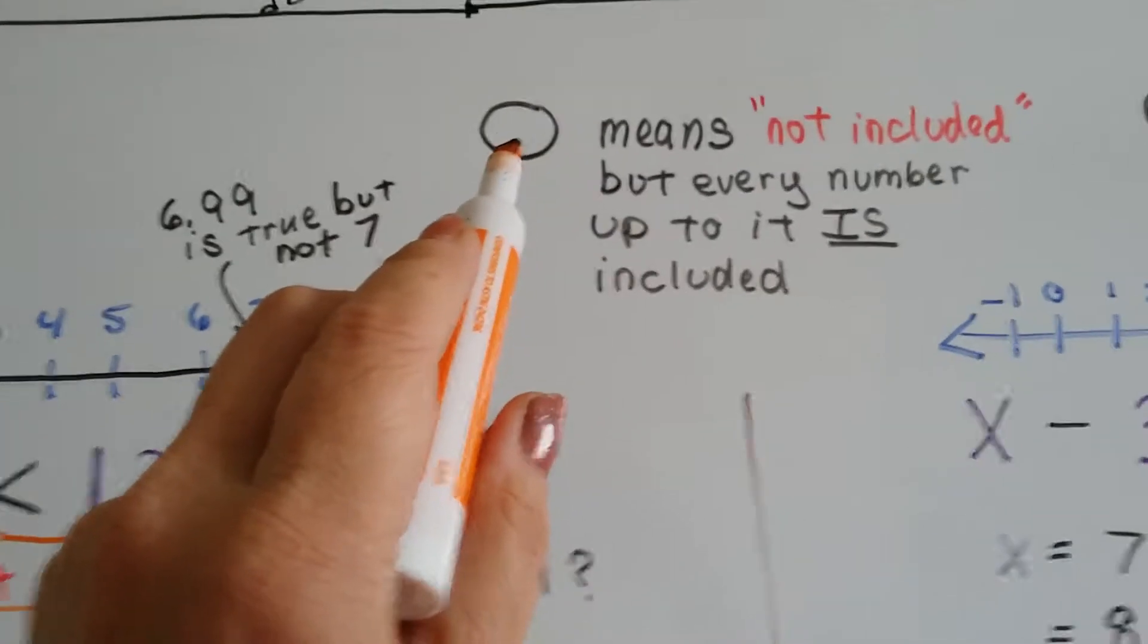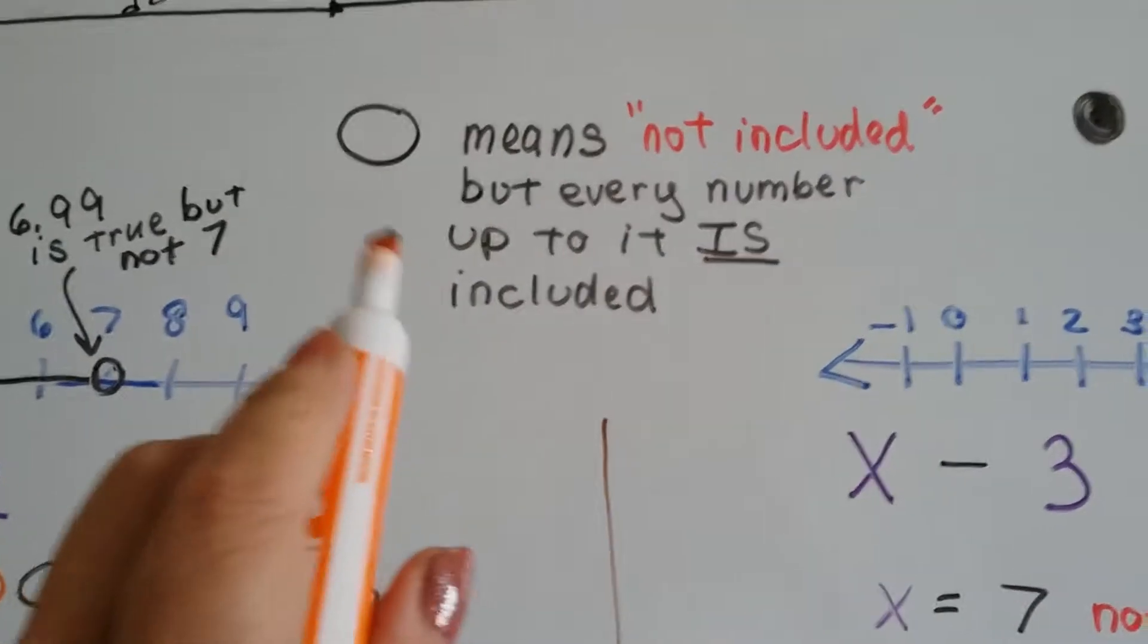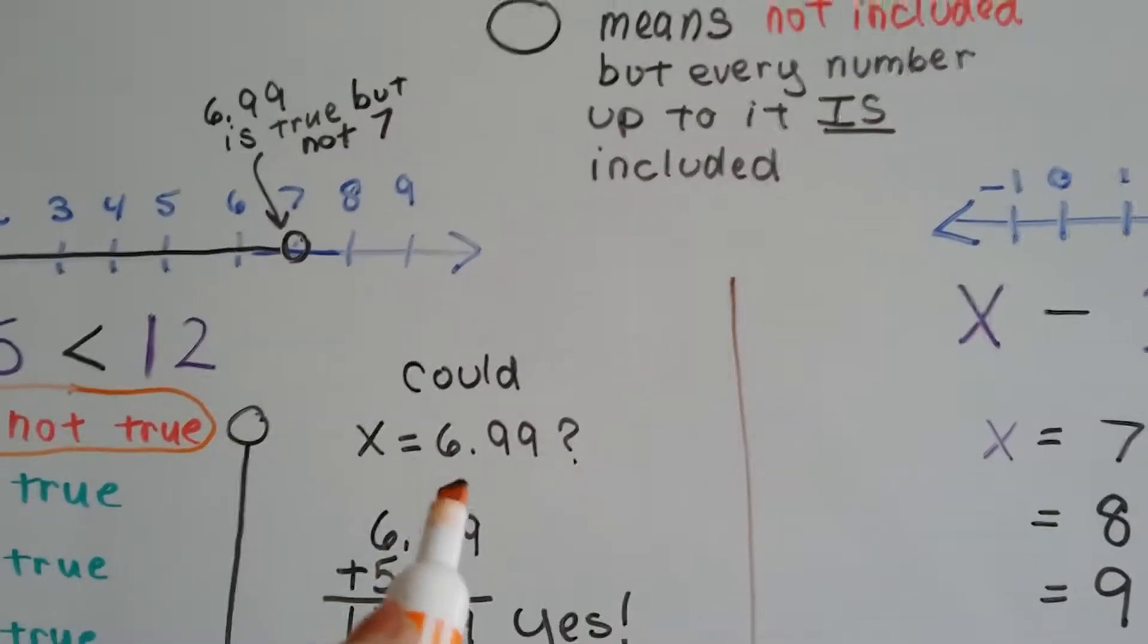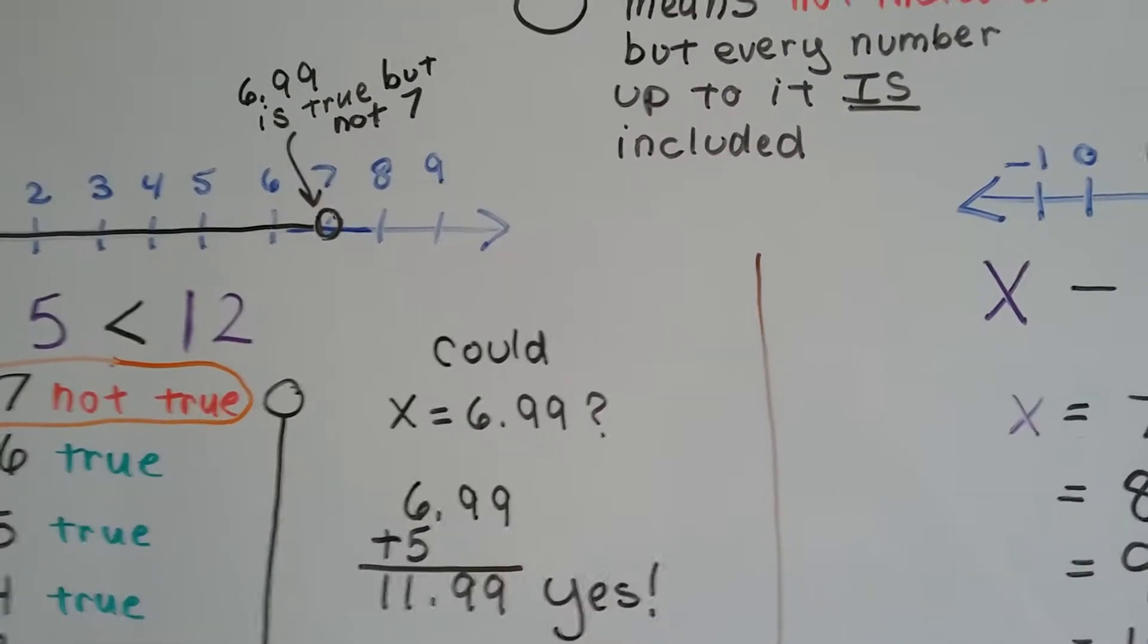When there's an open circle with nothing in it, that means it's not included, but every number up to it is included, even 6.99999. That would still be less than 12.